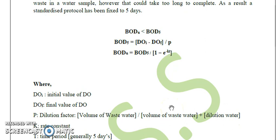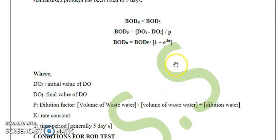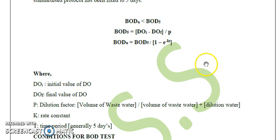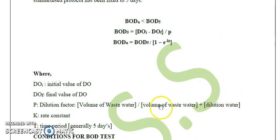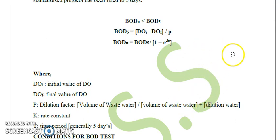The dilution factor P is calculated as the volume of wastewater divided by the volume of wastewater plus the volume of water added for dilution. That is: P = volume of wastewater / (volume of wastewater + volume of water added for dilution).